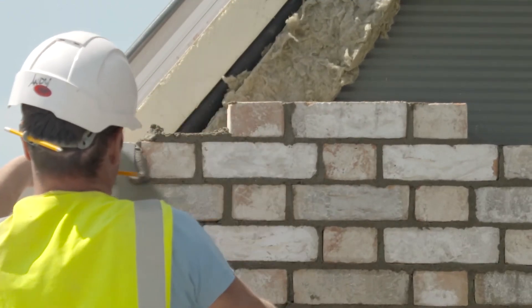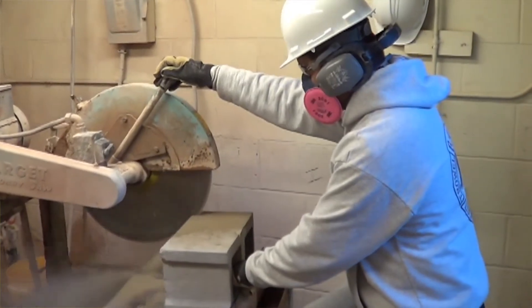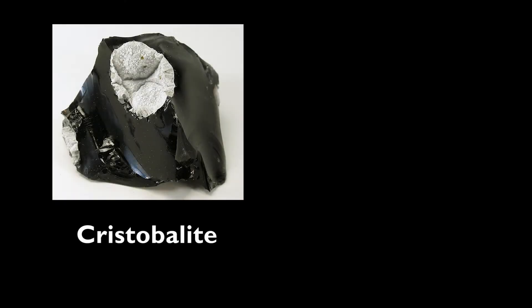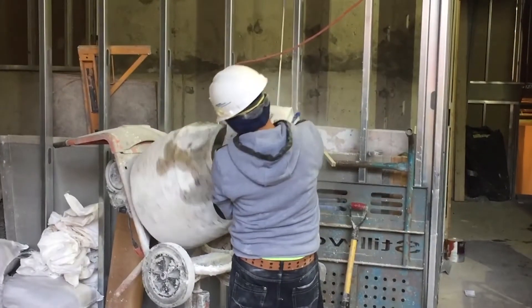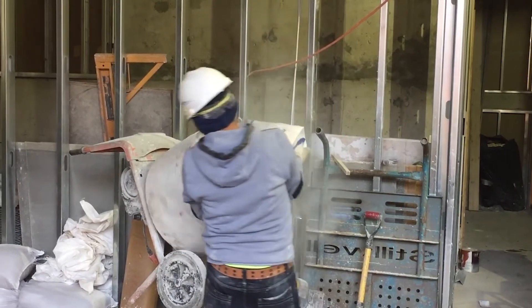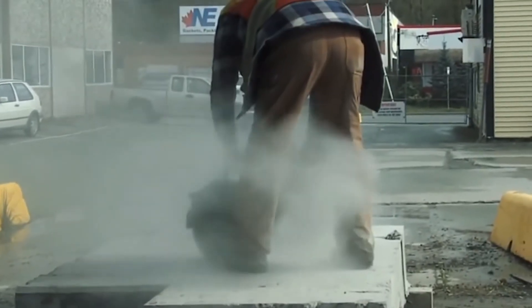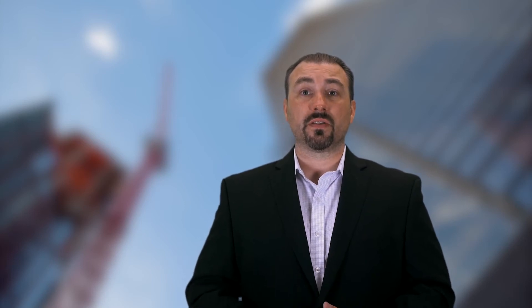Materials containing quartz are also found in a wide variety of workplaces. The two other forms of silica are cristobalite and tridymite. All these forms of silica become hazardous when very small particles are inhaled into the lungs. OSHA refers to this type of inhalable silica dust as respirable crystalline silica.